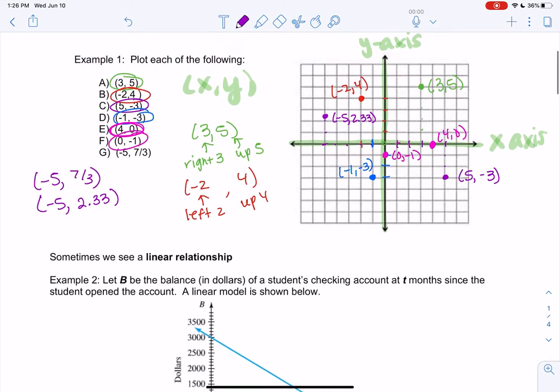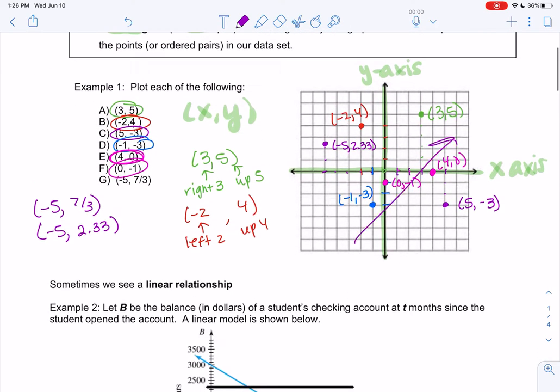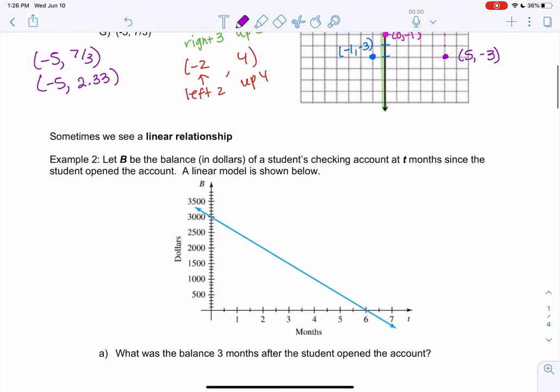Sometimes our scatter plots make nice lines. This one doesn't make a line. There's no line that goes through it. But oftentimes we might have a bunch of points that make a line.